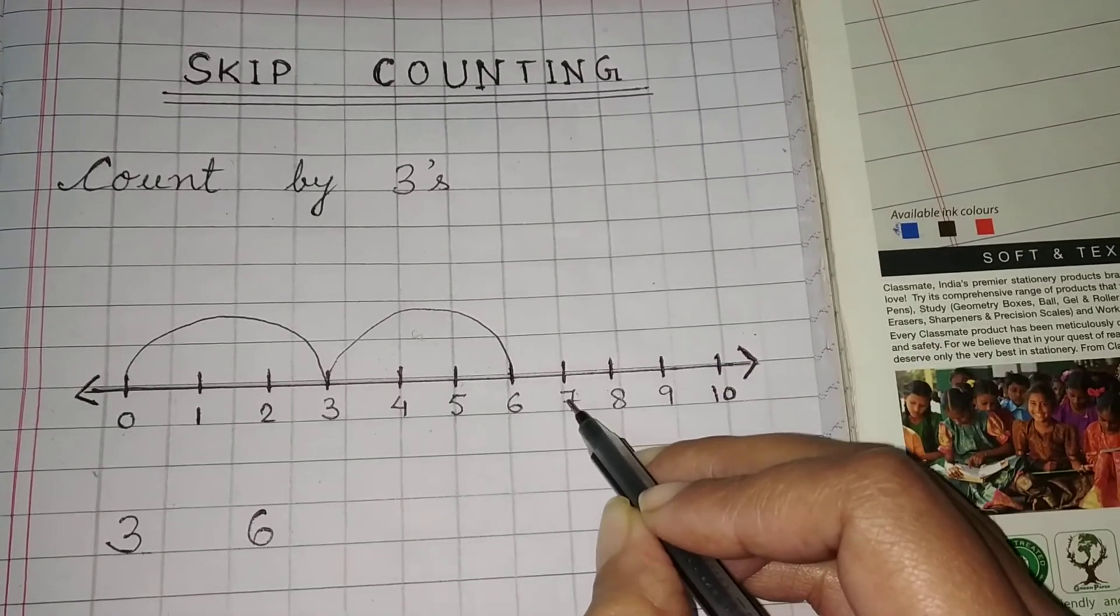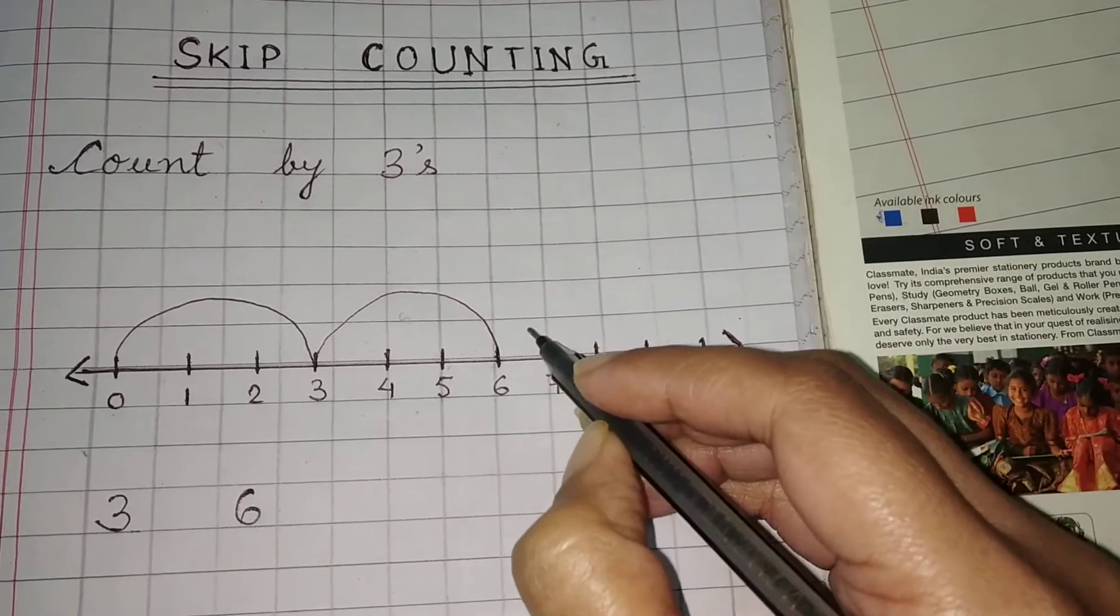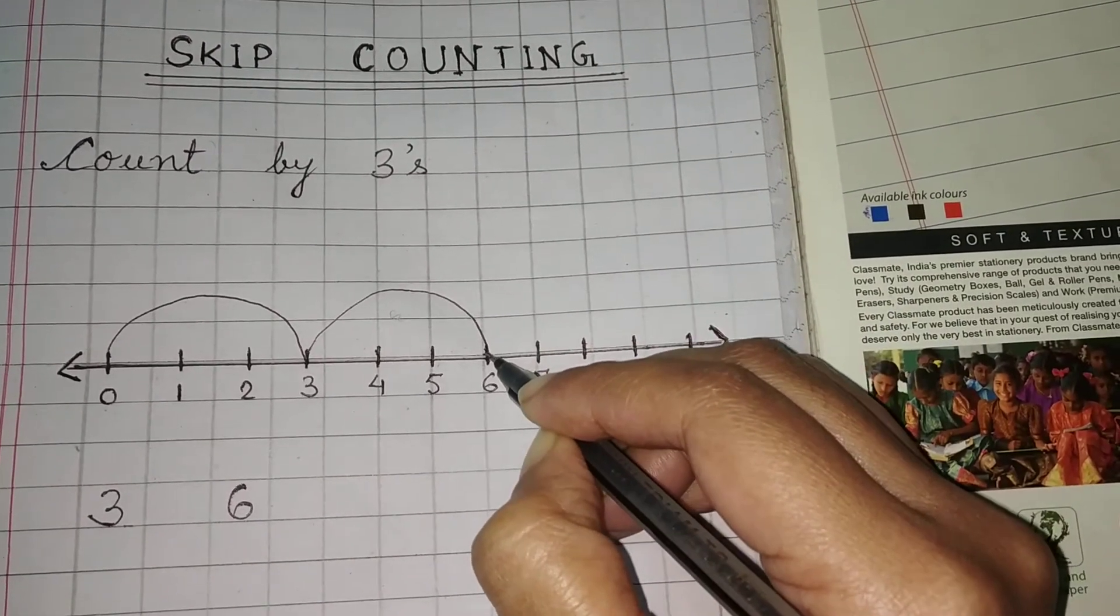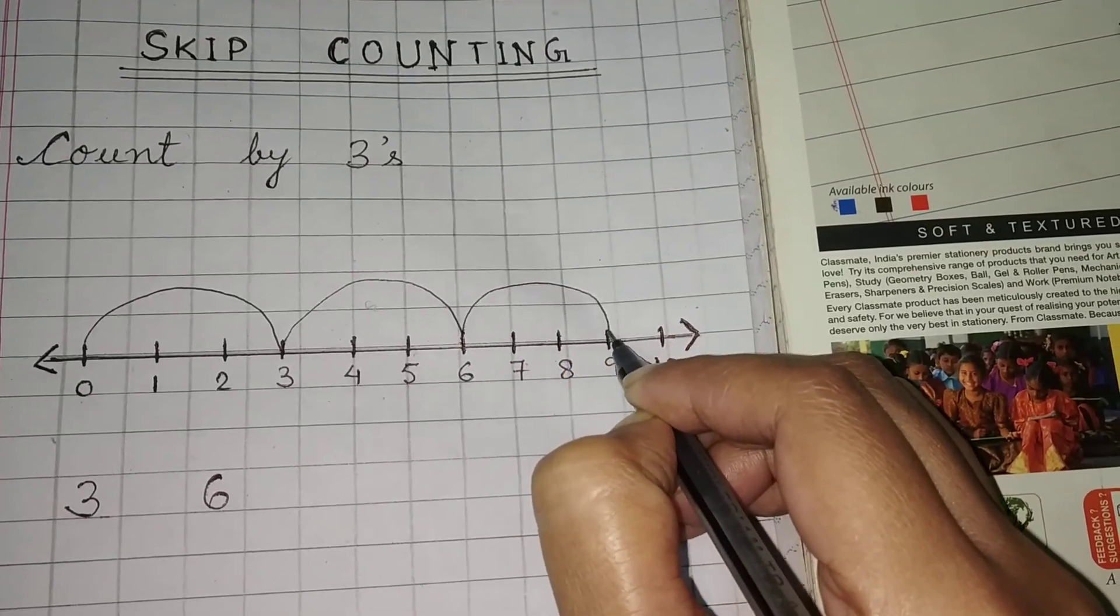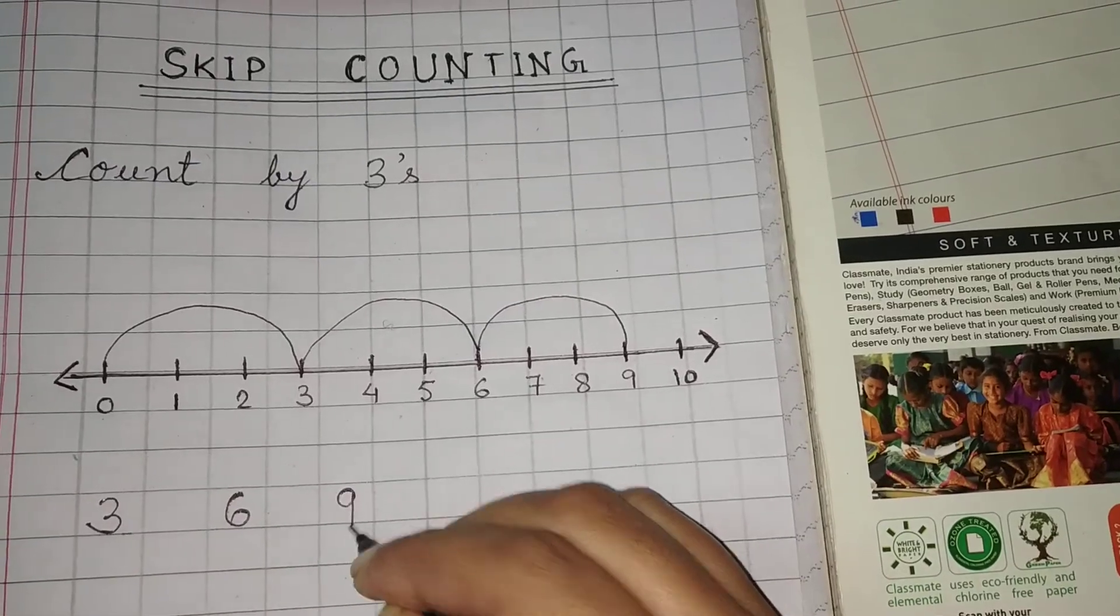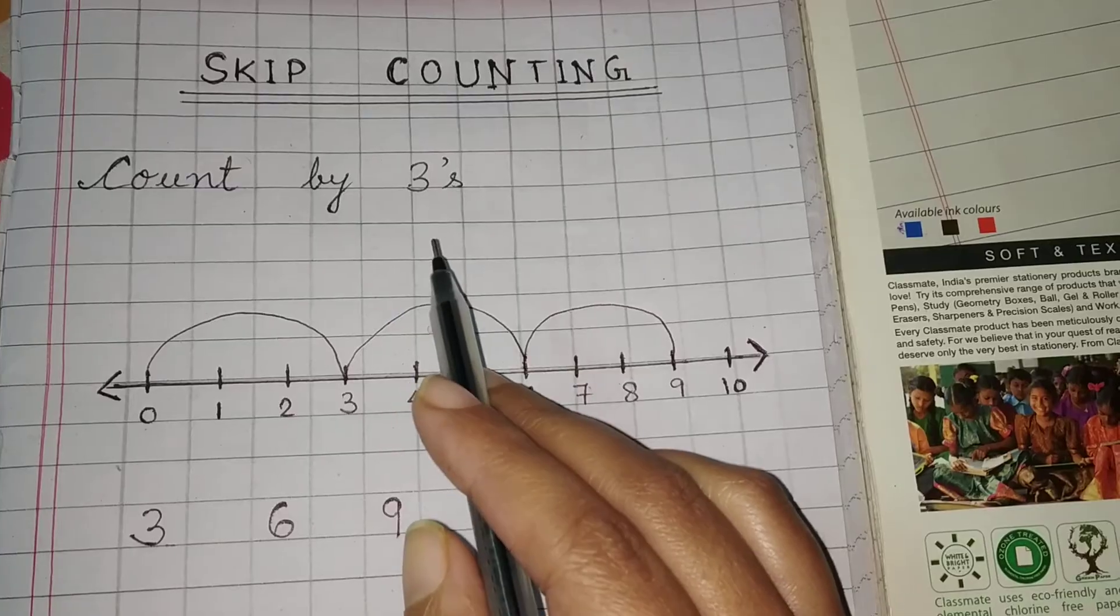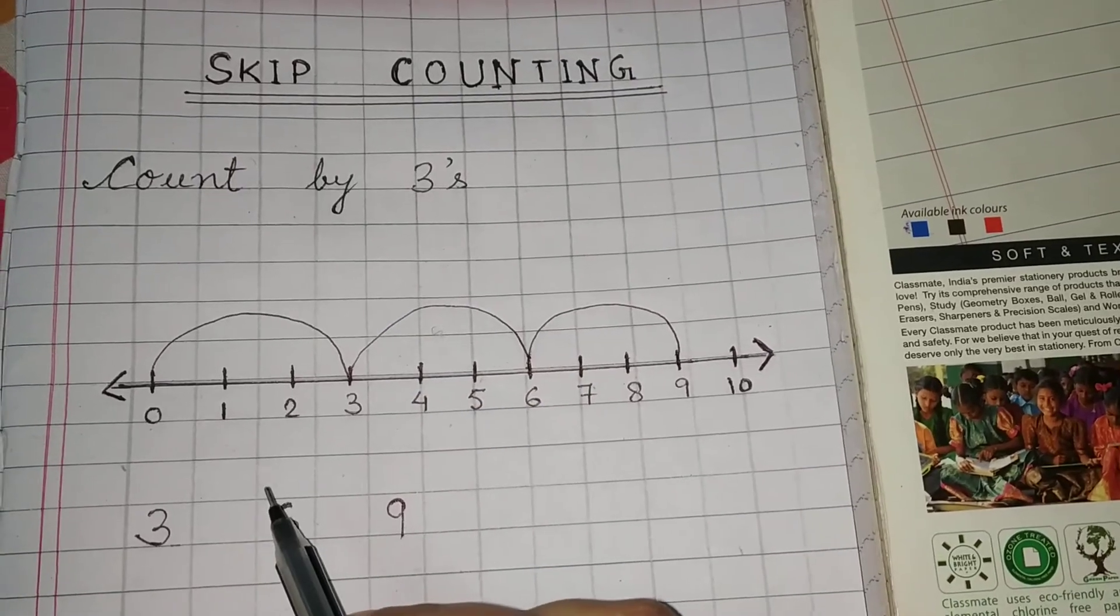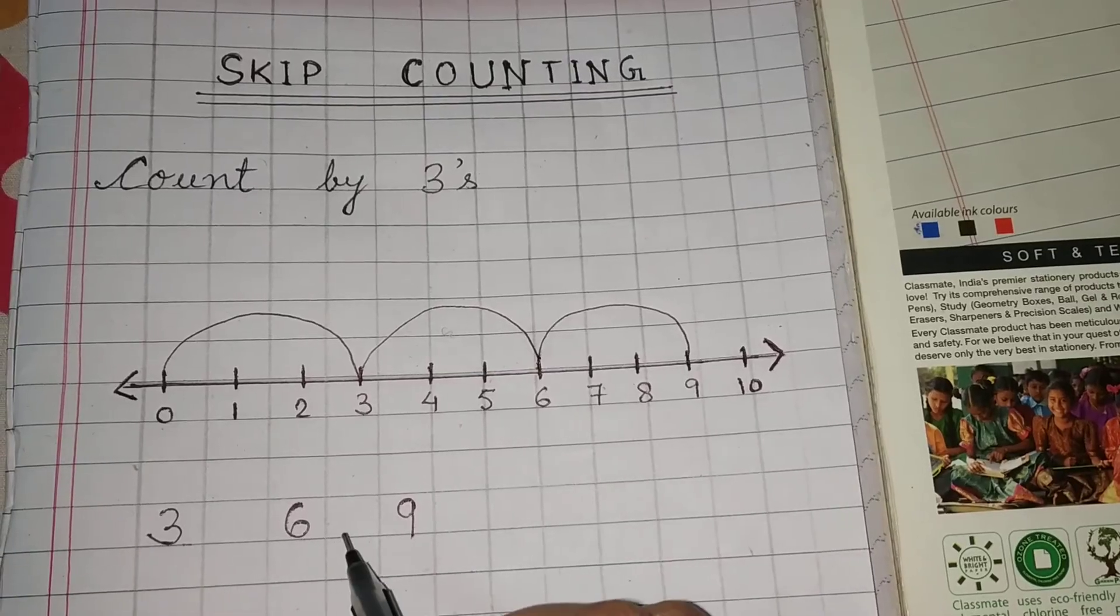Again one, two, three. So from six we will draw the half circle to the number nine, and we will write here nine. So skip counting by three from the number line, three numbers are coming in counting by three.